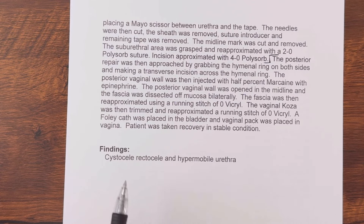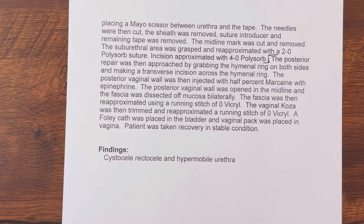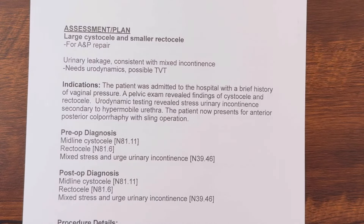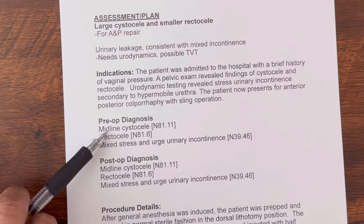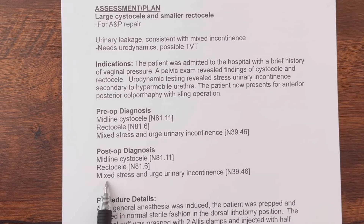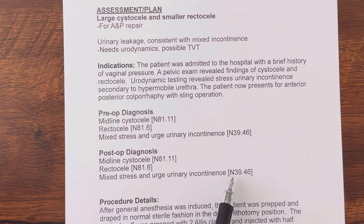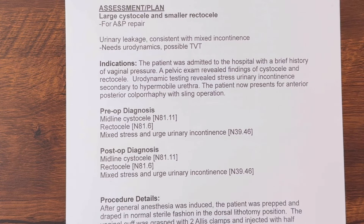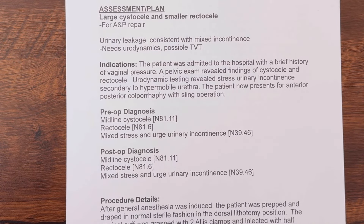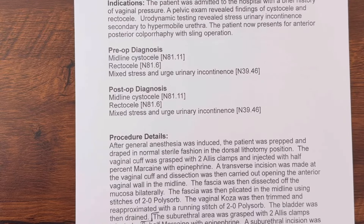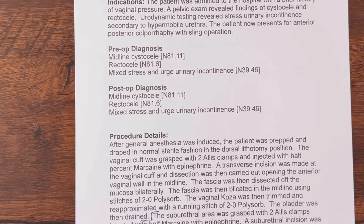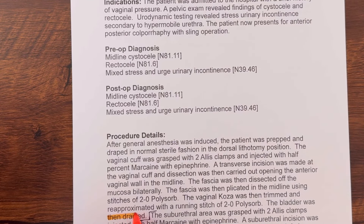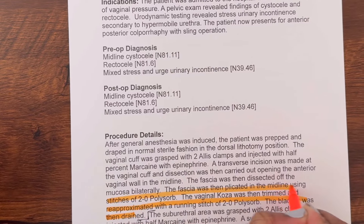Our findings were a cystocele, a rectocele, and a hypermobile urethra — the exact same things mentioned in the indications. Our diagnoses are the cystocele and rectocele for the vaginal repair, and then the mixed stress and urge urinary incontinence, which is N39.46. The hypermobile urethra — I'm not going to write it down just yet because I want to show you my ICD-10-CM book.